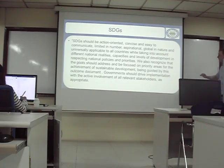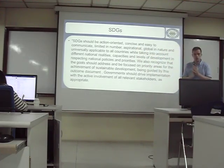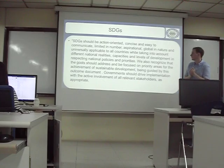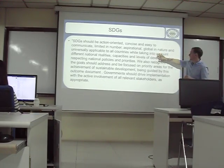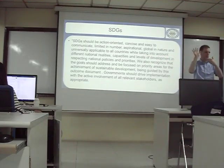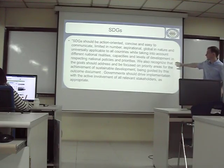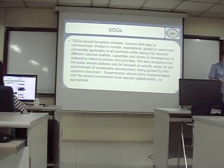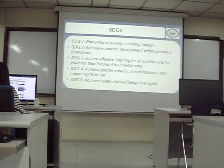The Sustainable Development Goals should be action-oriented — meaning people should take action because of them. Concise and easy to communicate. Limited in number. Aspirational — meaning we have to push ourselves, not too easy. And global and universally applicable to all countries. So these are the Sustainable Development Goals they made.